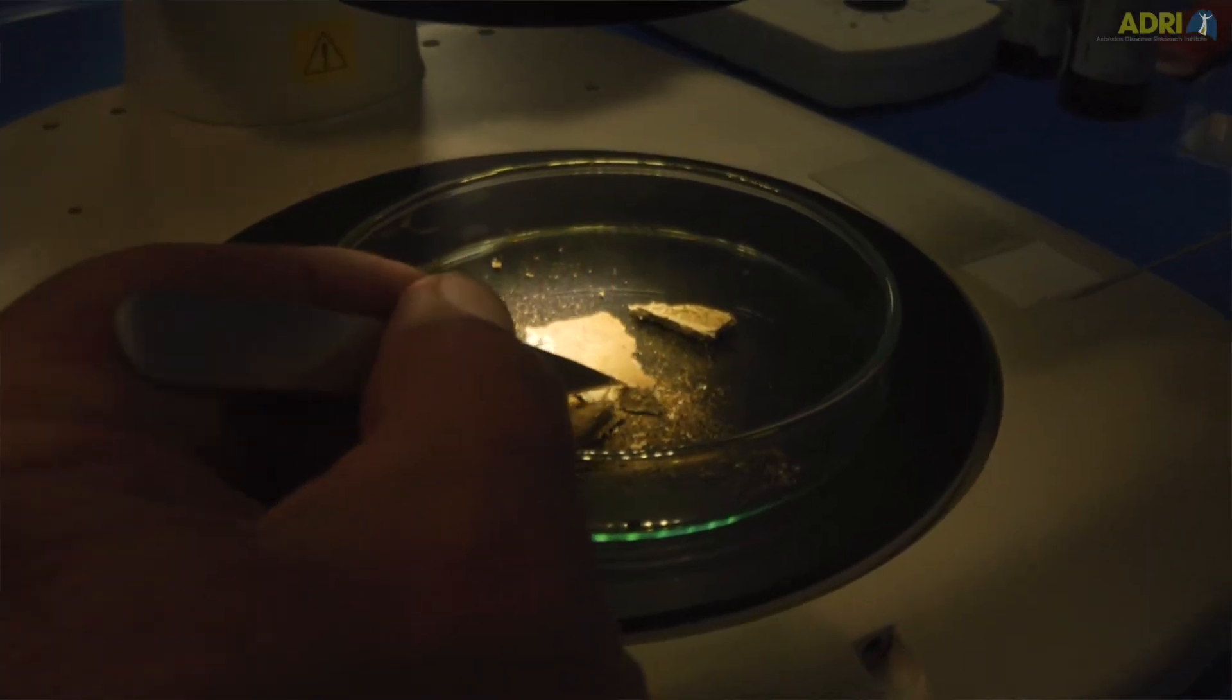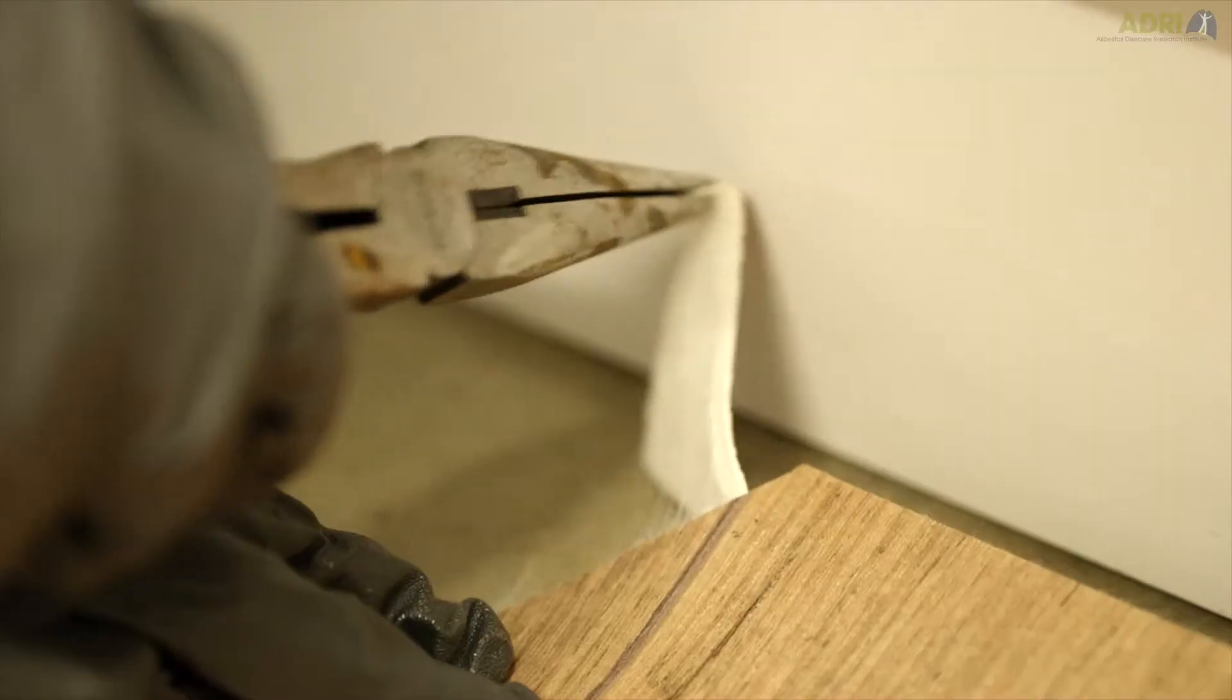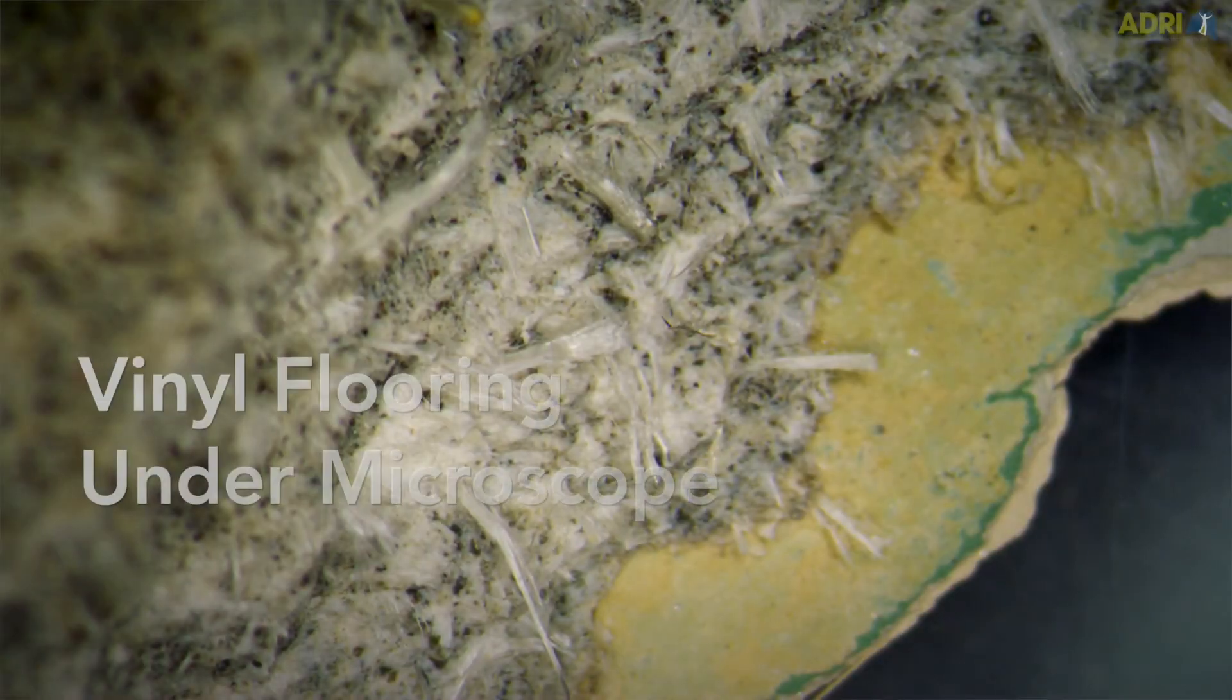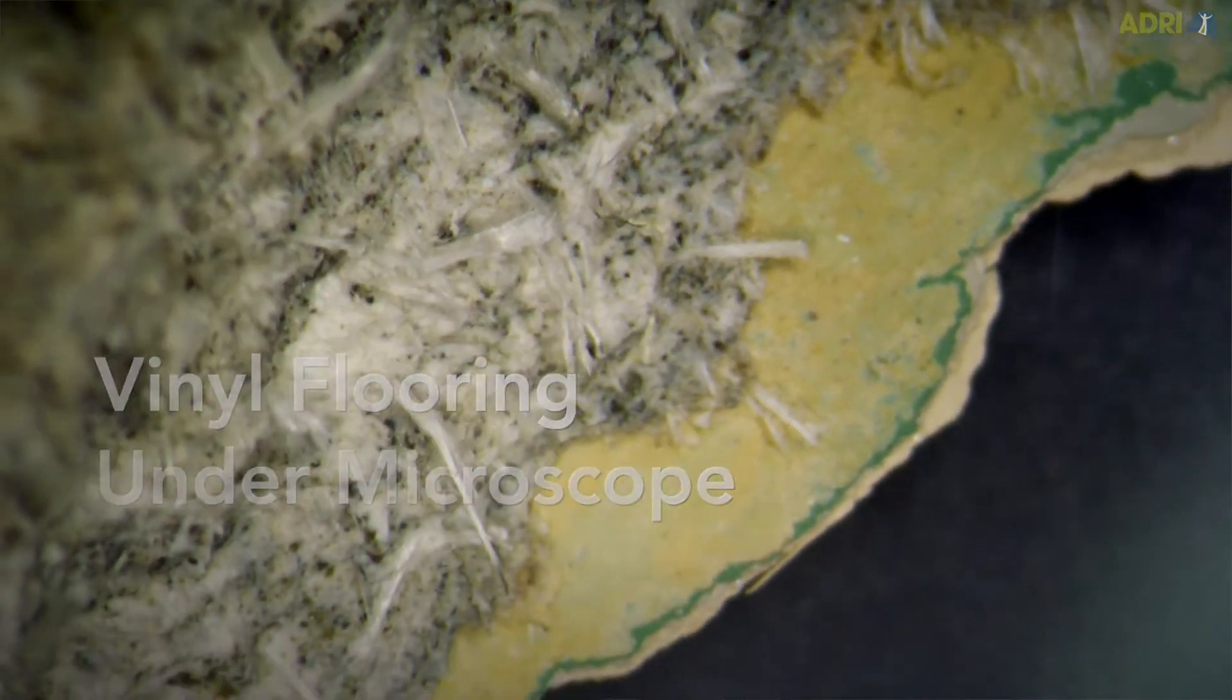Samples can have layers, so with our vinyl tiles we might have a vinyl layer, then there might be a paper layer or with some materials there might be a bitumen layer. So you need to look through the whole sample and maybe take sub-samples to identify each layer.